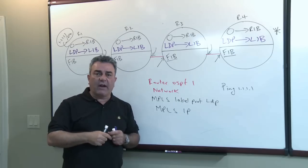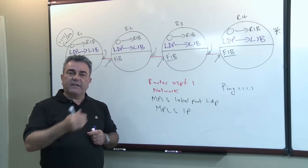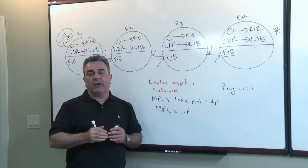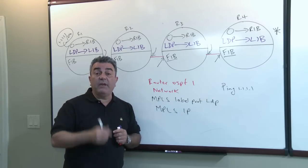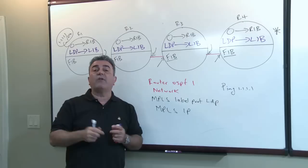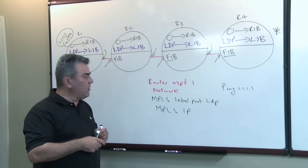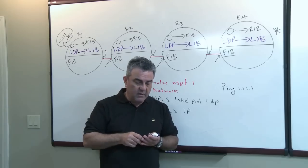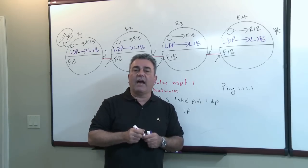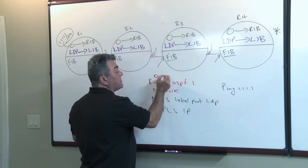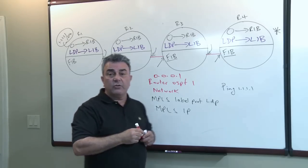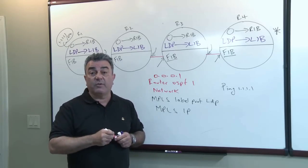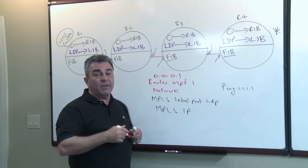In OSPF, we have a router ID. If one is not statically configured, it takes the numerically highest IP address of any loopback interface; if none exists, it takes the highest IP address on the device. LDP does the same thing — it goes through the same process to choose a router ID. To configure a router ID in OSPF, you go under 'router ospf' and say 'router-id'. But in LDP, the router ID is an IP address and it must be reachable for routers to establish an LDP session.